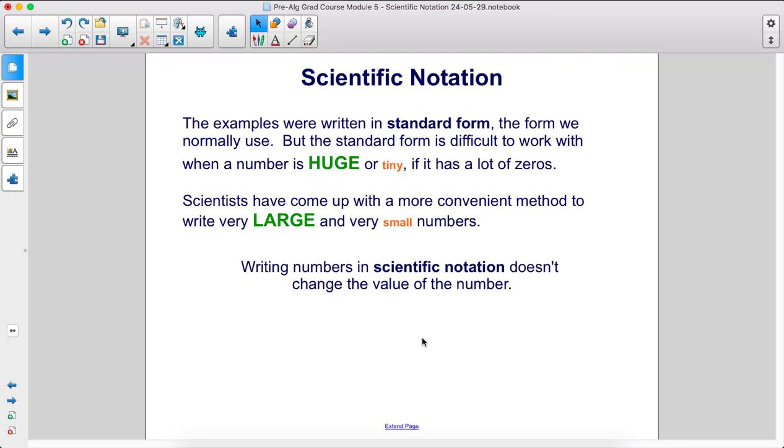The examples were written in standard form, the form we normally use, but the standard form is difficult to work with when a number is huge or tiny. Basically, if it has a lot of zeros.